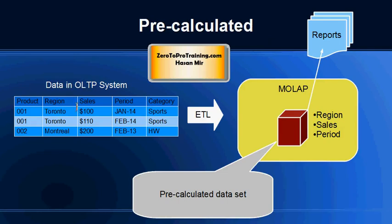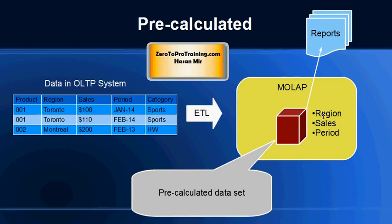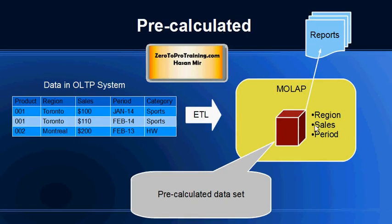Multi-dimensional OLAPs keep pre-calculated data. Let's say we have a table in our transaction system capturing these dimensions: which product was sold, in which region it was sold, for what price it was sold, in which period it was sold, and what category the product belongs to. If management wants to query based on region, sales, and periods, a cube is created based on these three dimensions in the OLAP system, and management can then perform queries very fast.